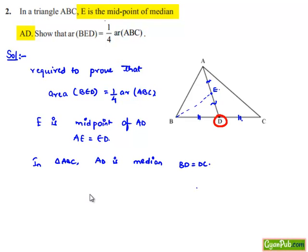We know that in a triangle, a median always divides area into two equal halves. Therefore, area of triangle ABD will be equal to half times area of triangle ABC.